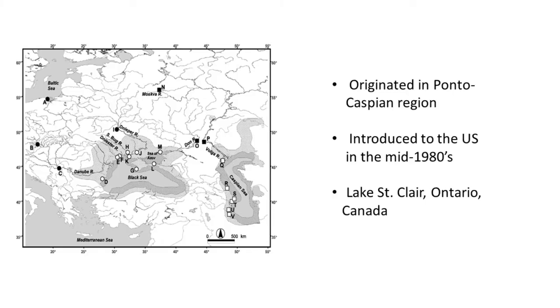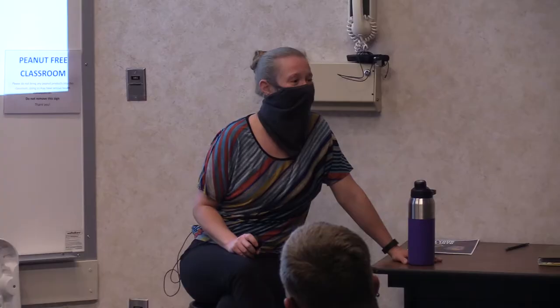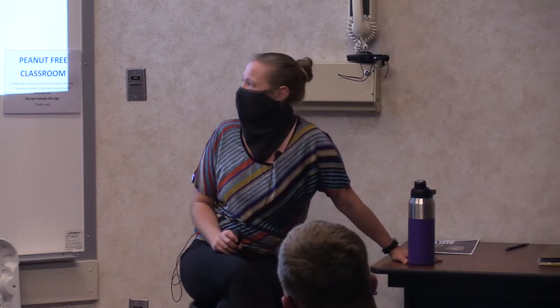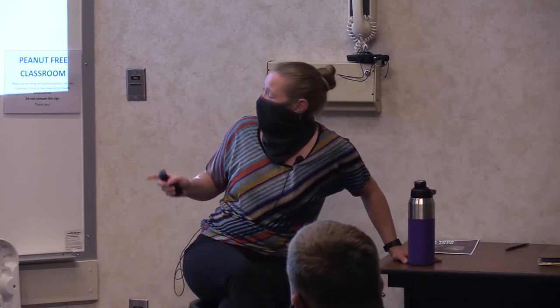How many of you have heard of zebra mussels before? These guys originated in the Ponto-Caspian region — the Black Sea and Caspian Sea area — and were introduced to the United States somewhere in the mid-1980s via Lake St. Clair in Ontario, Canada. These are aquatic bivalves that live in the water; they are filter feeders and have a really cool floating larval stage.